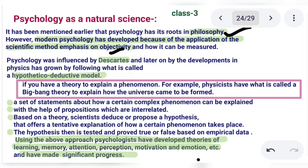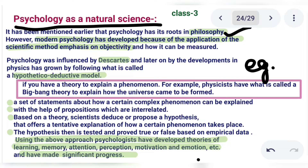Modern psychology has developed because of the application of the scientific method. In today's psychological methods, the focus is on objectivity and how to measure things. We do this in a scientific, objective way — every time we try to get the same answers. That is the same thing we do in psychology. We call psychology a natural science because it uses objectivity and the scientific method.